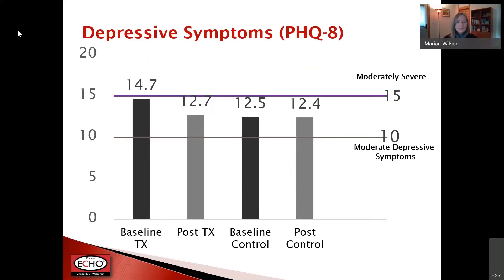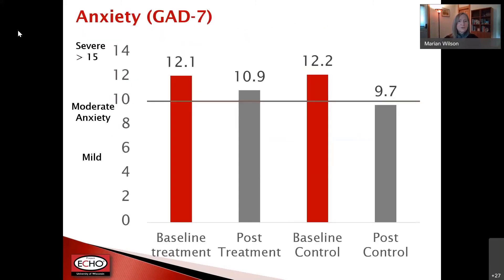When we looked at depressive symptoms, most of them most of the time fell into categories of moderate depressive symptoms on the PHQ-8. On post-test, there wasn't much difference from baseline to eight weeks later — depressive symptoms stayed pretty consistent in both the treatment and control groups. In anxiety, most participants had at least moderate anxiety, many falling into the severe range, and most were above a moderate level of anxiety using the GAD-7 at both baseline and post-treatment.